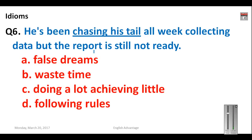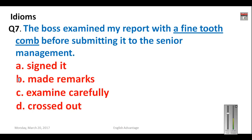Question number six is the idiom part. The underlined idiomatic expression is 'chasing his tail' from the sentence: 'He has been chasing his tail all week collecting data but the report is still not ready.' Chasing his tail means doing many things but achieving very little. Your answer will be C: doing a lot, achieving little.